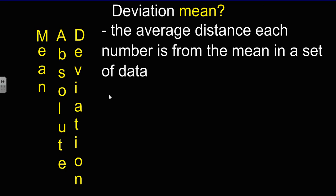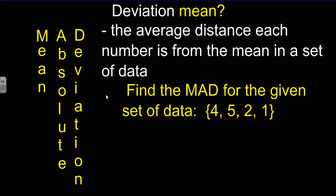The average distance that each number is from the mean in a set of data. So the average distance a number is from the mean. Again, you still might be confused, so let's look at an example.